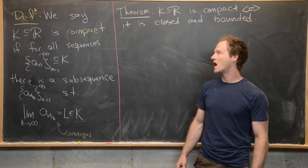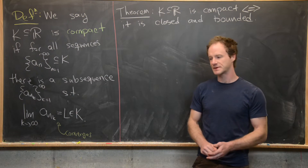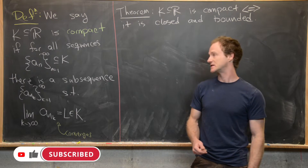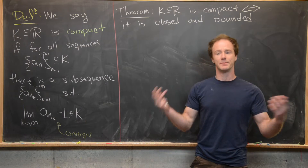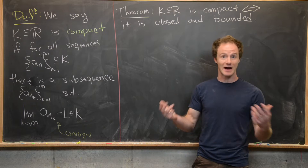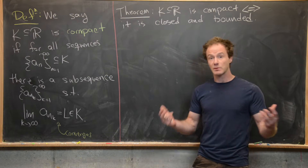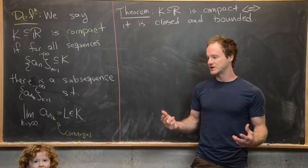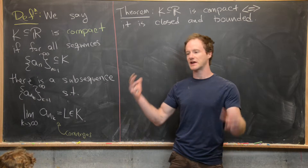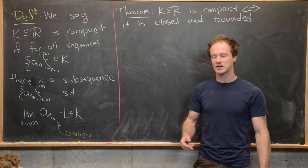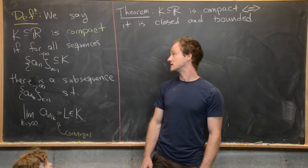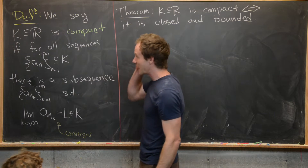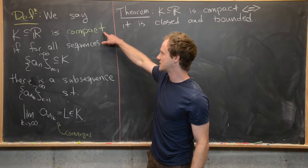Here we're going to begin looking at the notion of a compact set of real numbers. There are lots of different equivalent ways to define compact sets of real numbers, and we're using the one that goes in line with the textbook. If you're taking this from someone else you might use a different definition, and furthermore this definition is specialized to the real numbers — if you're looking at this from a more general topology point of view then the definition is also slightly different. So let's look at this definition.